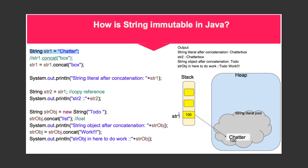So we can see here, 100, the address or reference of Chatter is stored. Now when you try to concatenate this string str1 with another string called Box, the previous string str1 is not updated or modified.